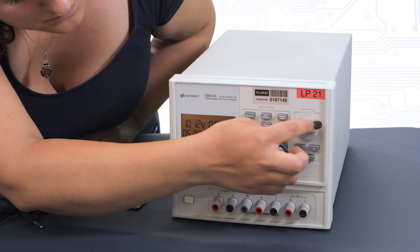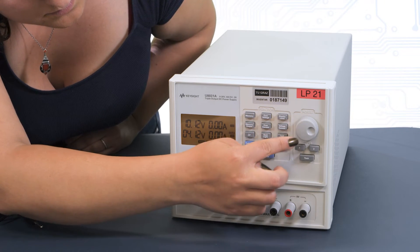Pay attention that the power supply unit outputs the last voltage set at the respective output as soon as the output is switched on. Therefore, you should always set the power supply before connecting the circuit to it. In the worst case, circuit components could otherwise be destroyed by too high voltages or currents.